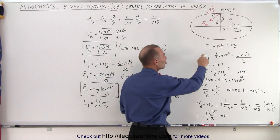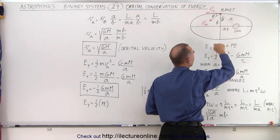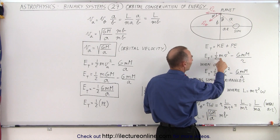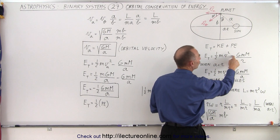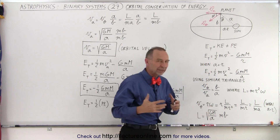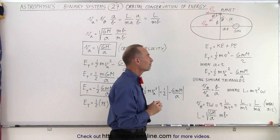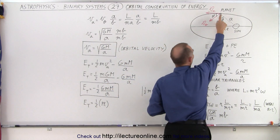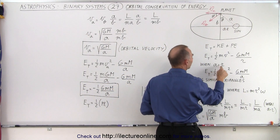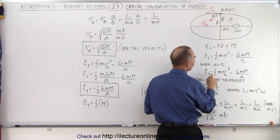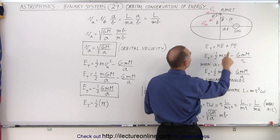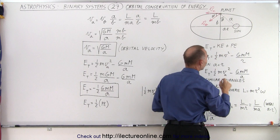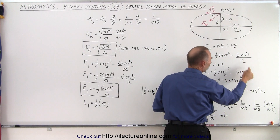The total energy of the object in orbit — in this case the planet or the Earth — is equal to the sum of kinetic energy plus potential energy. In general, kinetic energy is one-half mv squared, and potential energy is minus GmM over R, assuming potential energy equals zero at infinity. At this moment when the planet is at this location, A equals R, so the total energy becomes one-half mv_A squared minus GmM over A, because R now equals A.